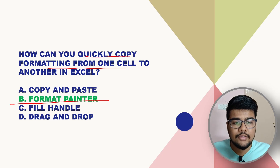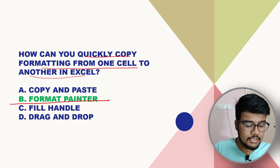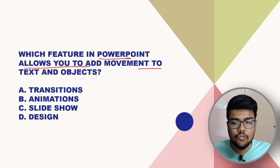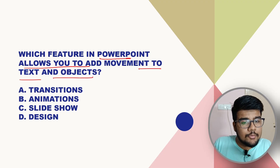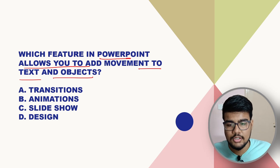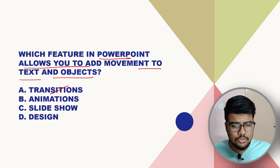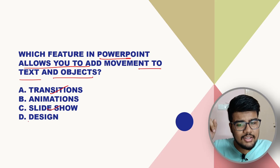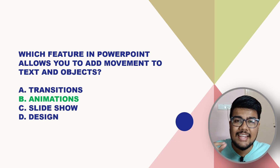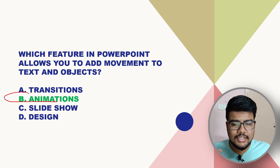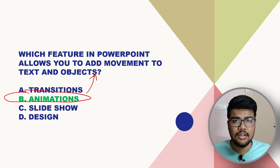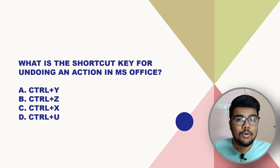Which feature in PowerPoint allows you to add movement to text and objects? The options are Transitions, Slideshow, Animations, and Design. Slideshow is a different thing, so we can eliminate that. The answer is Animations — animations and this definition are clearly correlated.